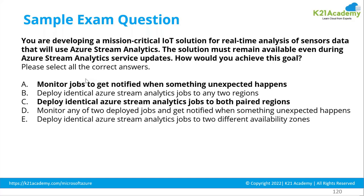So A and C is the correct answer, and that is the way you should think about it. Interestingly, this question has nothing to do with data engineering specifically — it could appear in an AZ-900 fundamental exam. Knowledge of region pairs and service updates is discussed in AZ-900, including health updates, uptime, and connectivity SLAs.